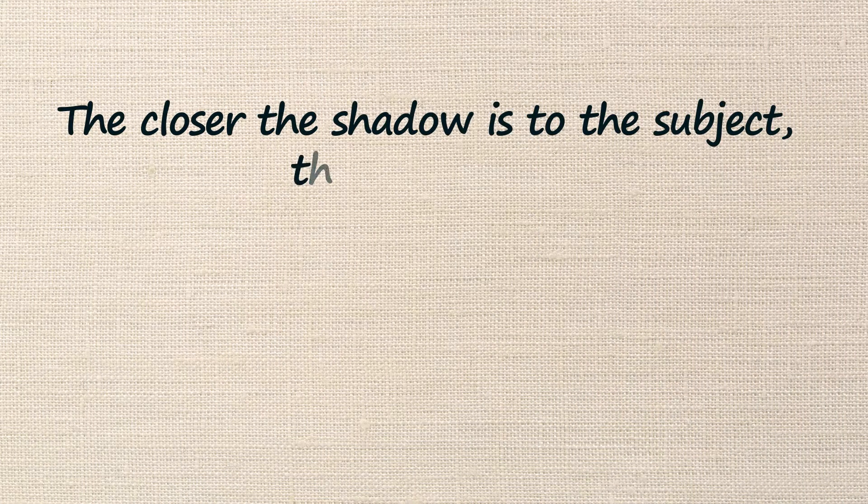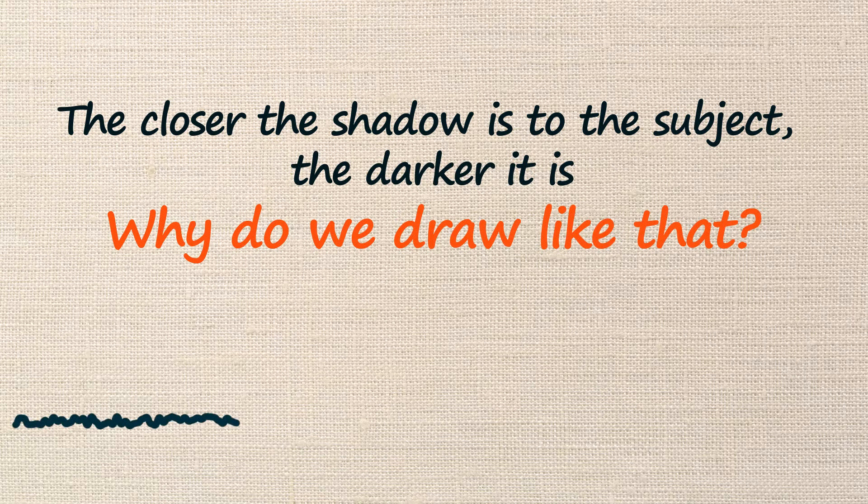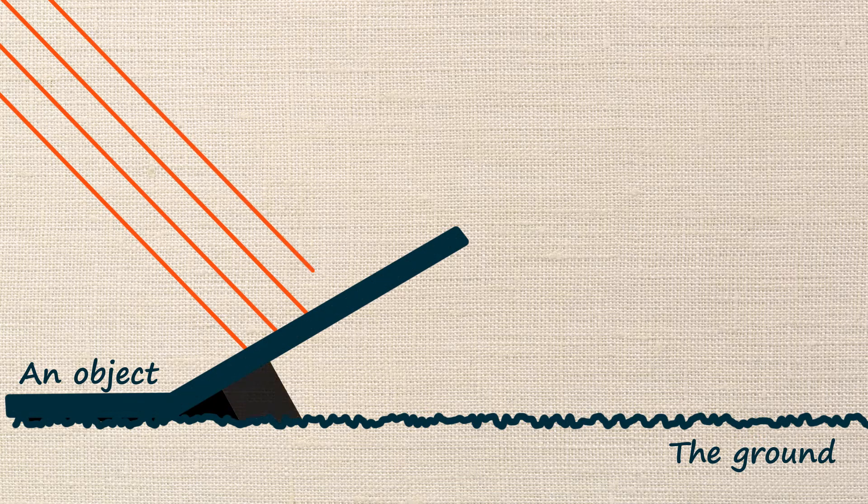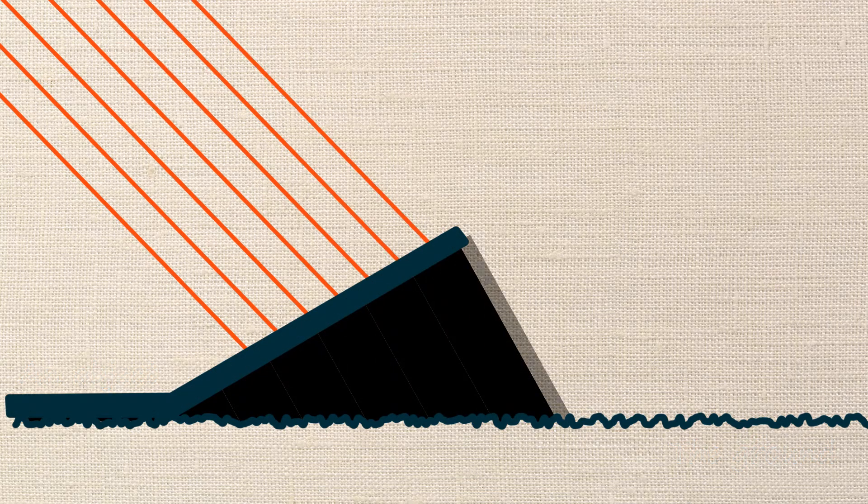Why we draw a shadow the closer to the subject the darker? When a part of the rays is delayed by an object, a shadow is obtained on the ground.